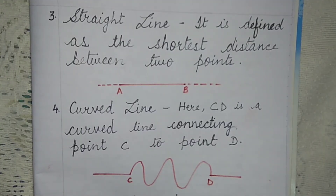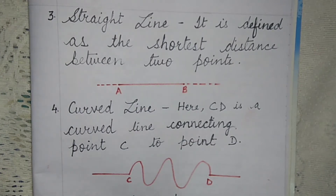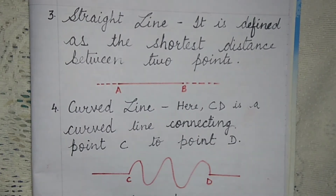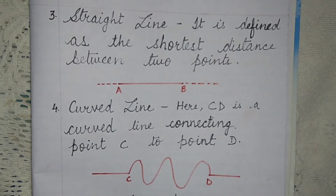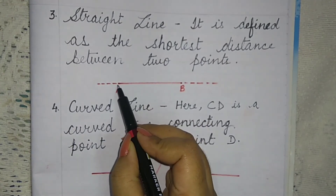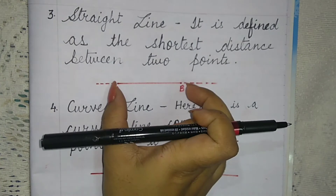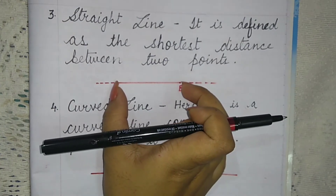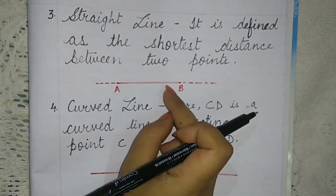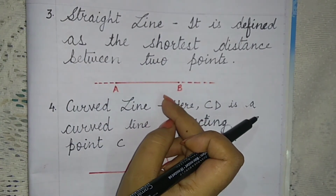What is a straight line? It is the shortest distance between two points. Here point A and point B are given, and these two points are joined straight — that is called a straight line.